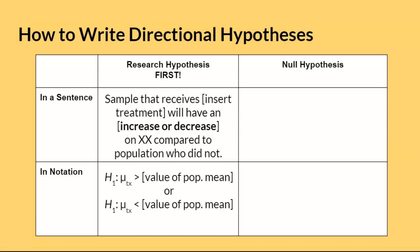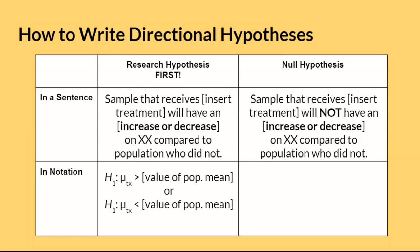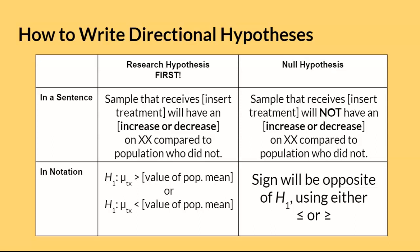In notation, there will be two options based on the direction that is hypothesized. The first notation indicates that there will be an increase — the sample will be greater than the population mean, mu. The second notation predicts that there will be a decrease — the sample will be less than mu. The null hypothesis is just the complete opposite of the research hypothesis. We are saying that there will not be an increase or a decrease, as specified from the research hypothesis. In notation, the null hypothesis will look just like the H1 notation, but the sign will be opposite, using either less than or equal to, or greater than or equal to. Please wait for the lecture example at the end of the video for clarification.